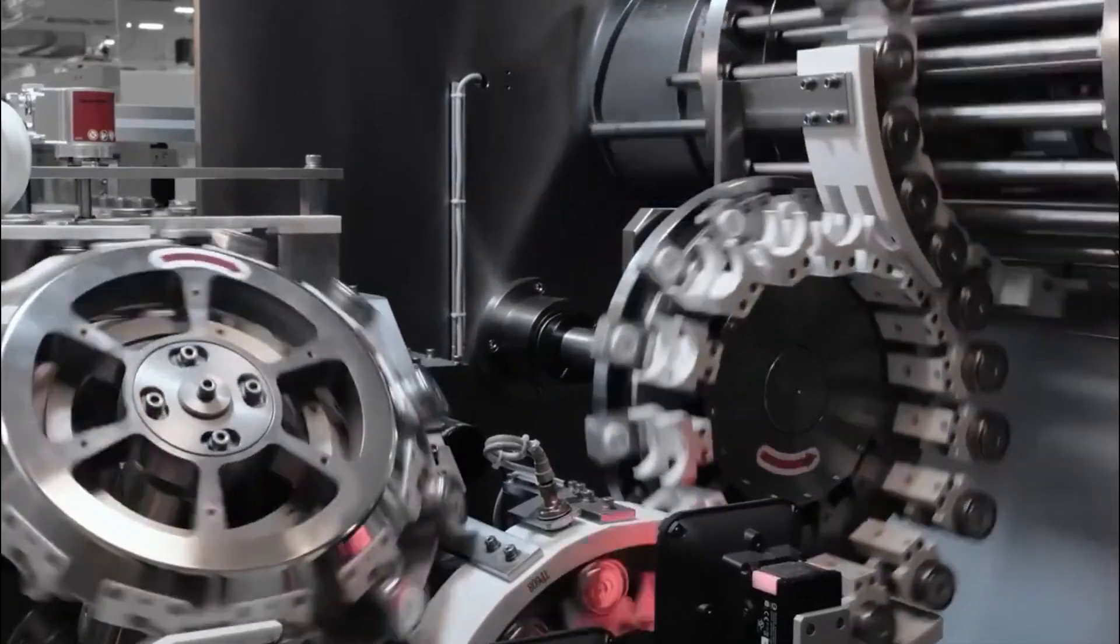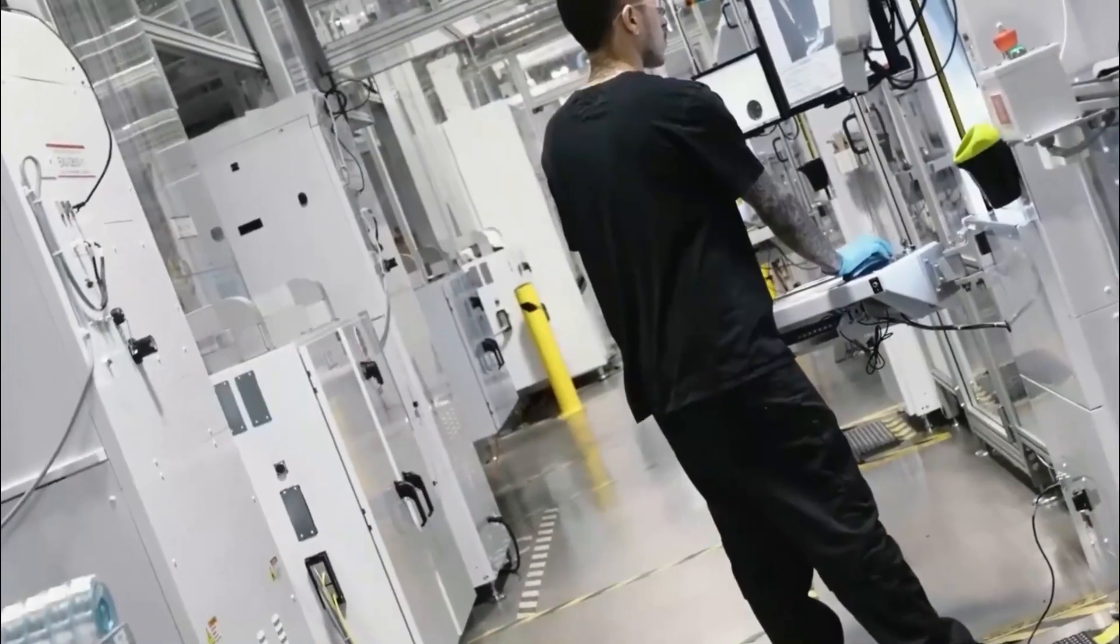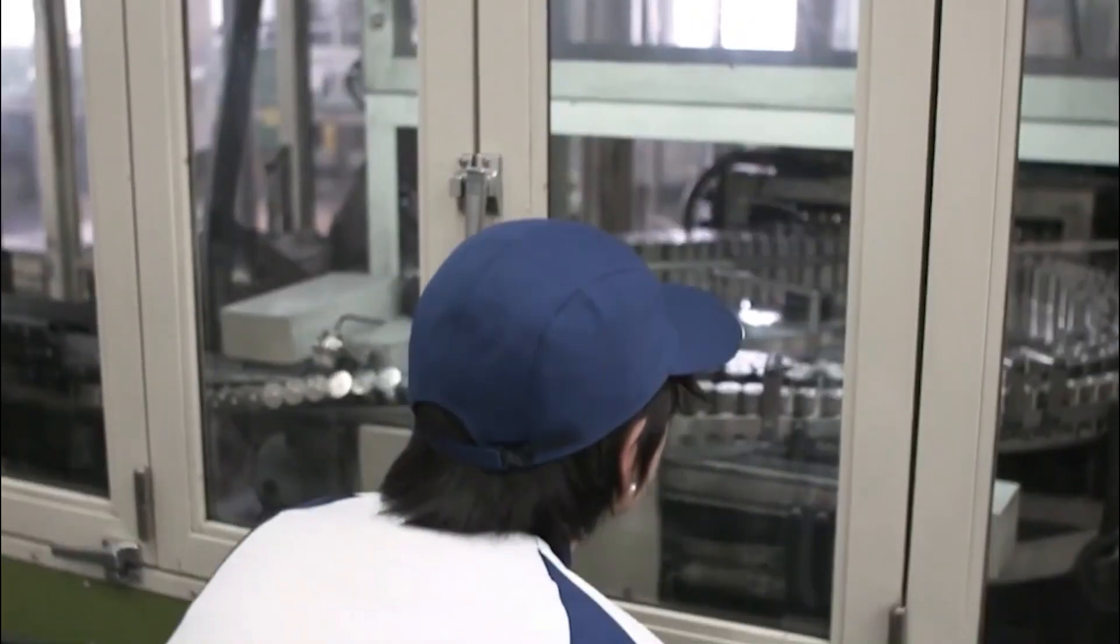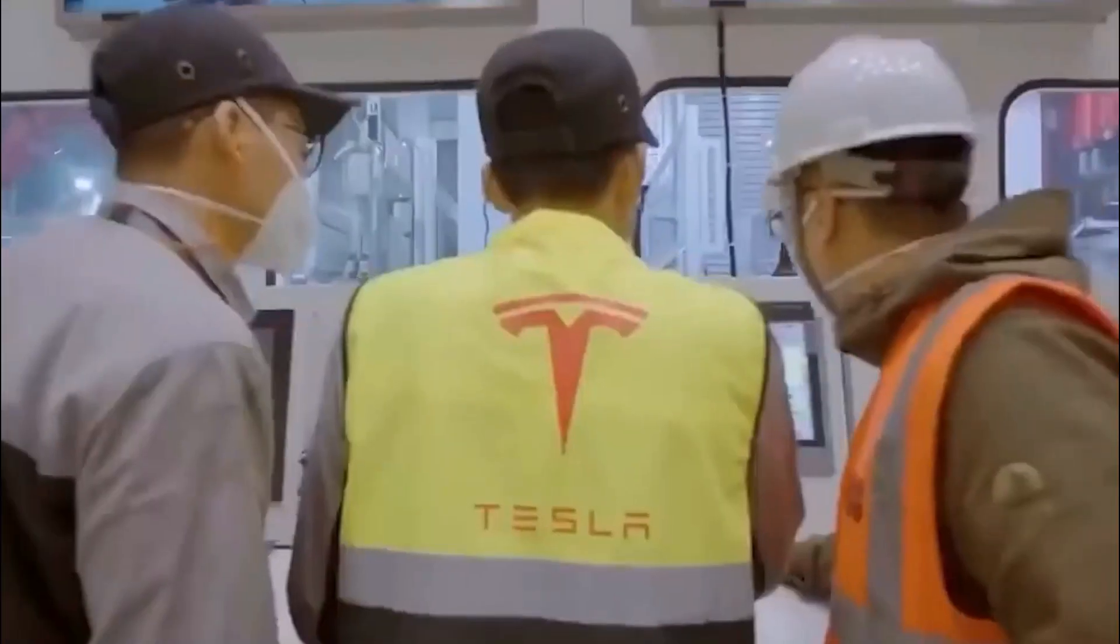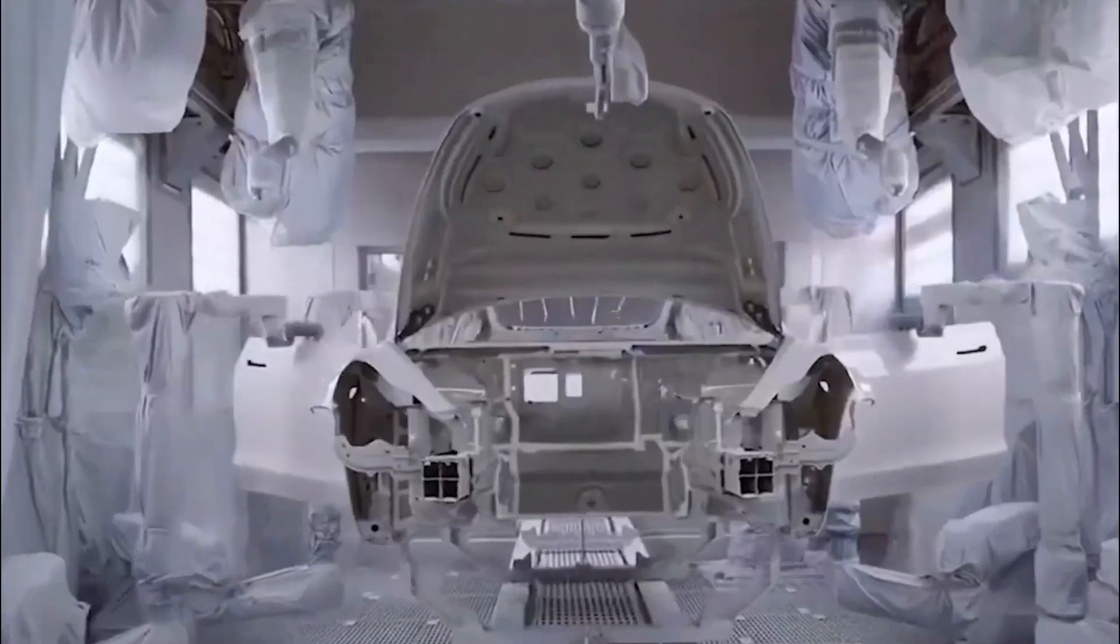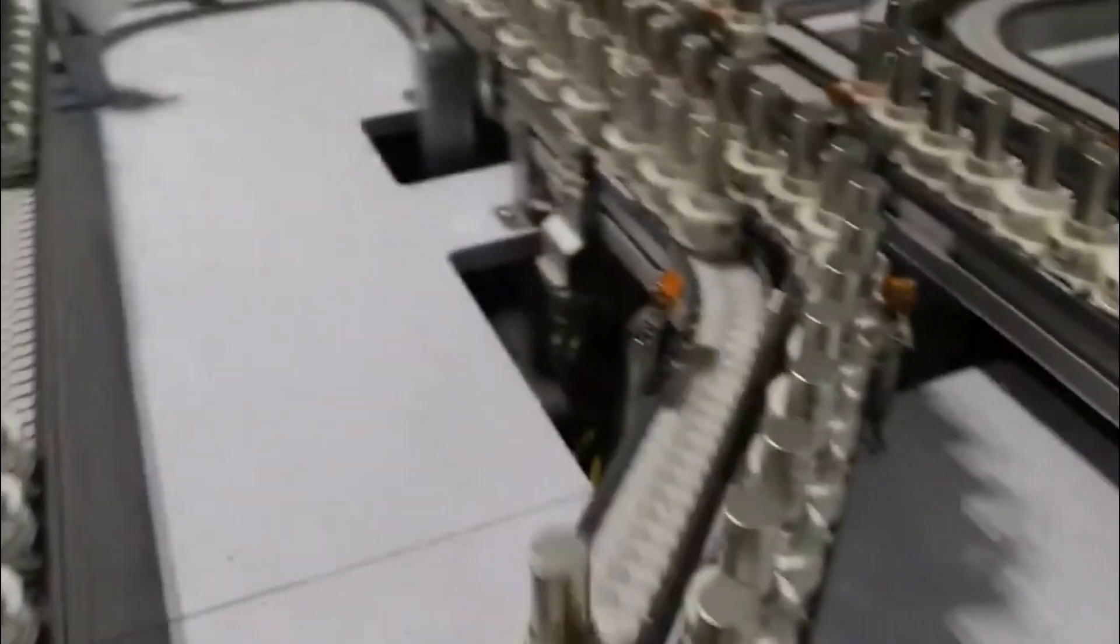Tesla's proactive approach to securing its battery supply is evident through strategic deals, partnerships, and its pursuit of in-house battery cell production. Recognizing the immense demand for energy storage, Tesla's investments in battery-related infrastructure and technologies highlight the company's dedication to shaping the future of sustainable energy.